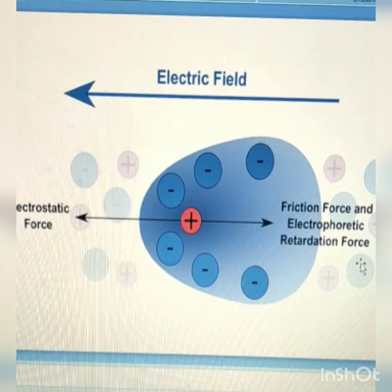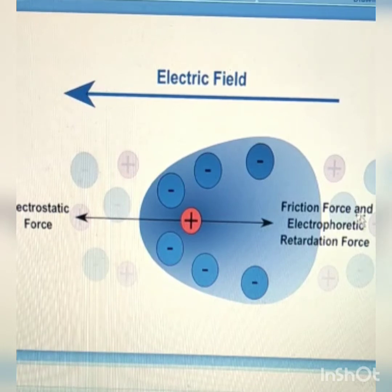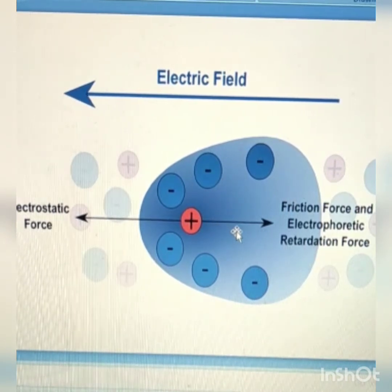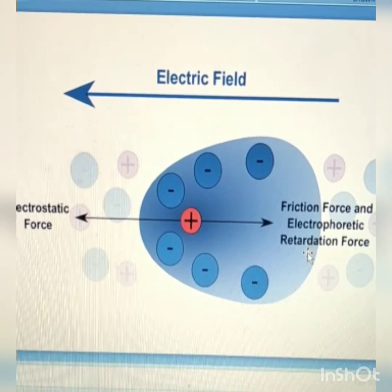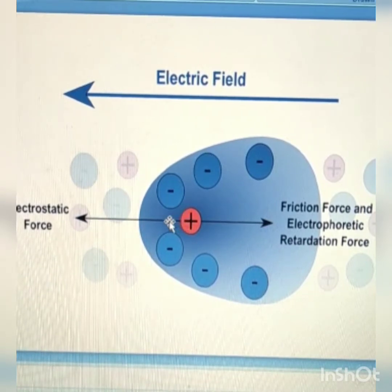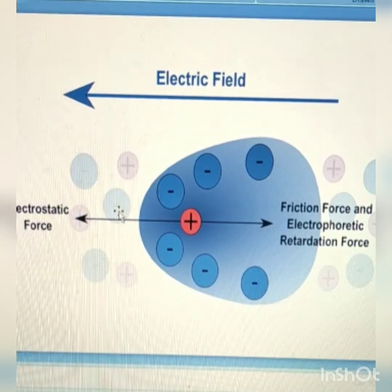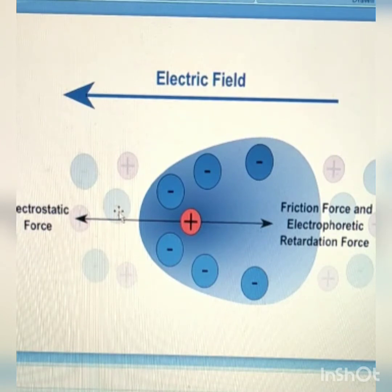When an electric field is applied or generated, there are two kinds of forces operating in opposite directions — friction force and electrophoretic retardation force, which operate backwardly, and the electrostatic force, which operates towards the direction of the electric field and helps the molecules to move forward.